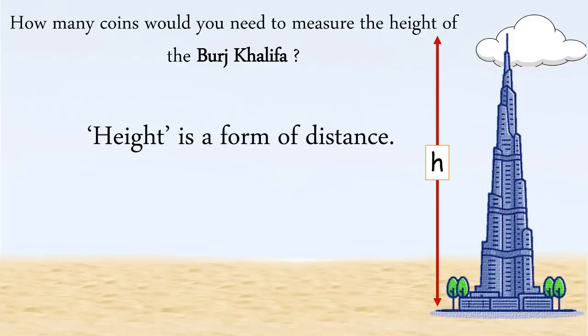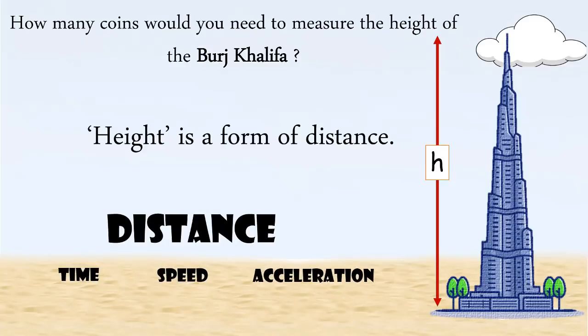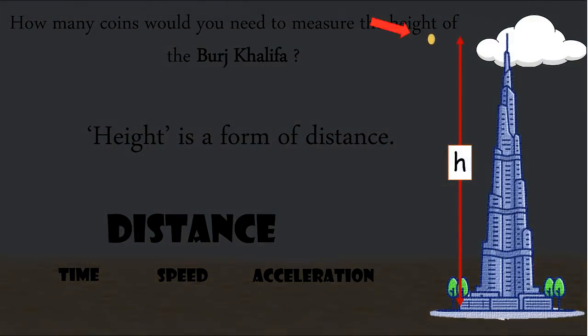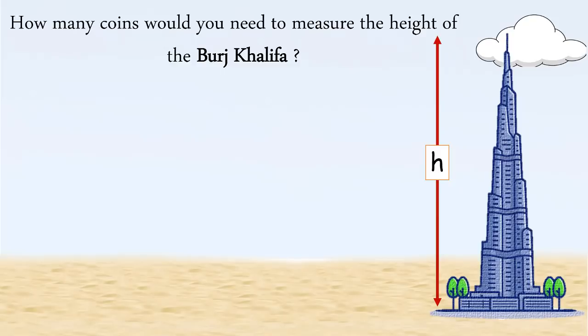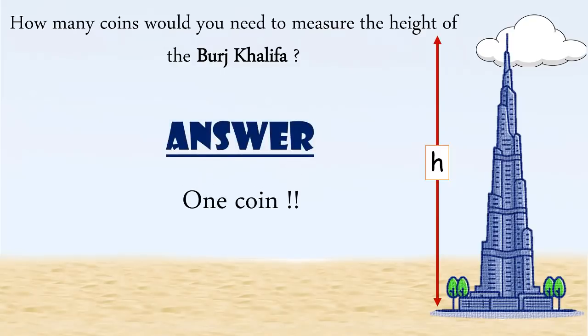Height is a form of distance. And when we think of distance, a few parameters automatically come to our mind such as speed, time, etc. So we can think of using just one coin to make the coin travel a distance equal to height h. So the answer has to be just one coin.